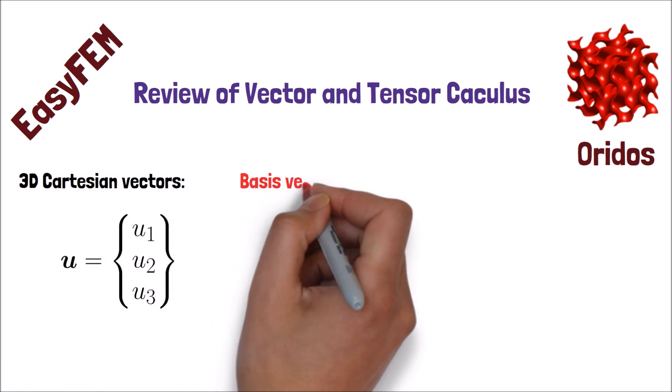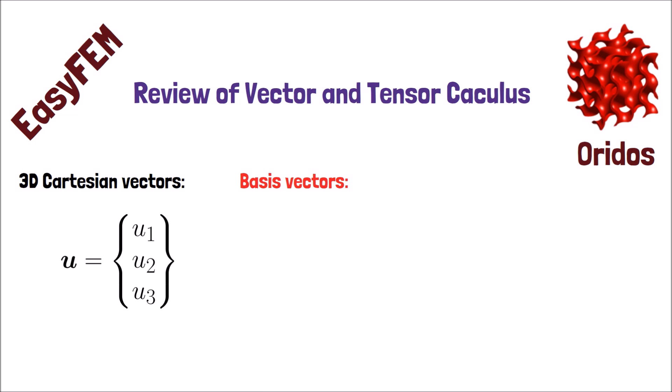We can also use basis vectors to describe U. Basis vectors are defined as a set E of vectors in a vector space, if every element of the given vector may be written as a finite combination of elements of the basis vector.